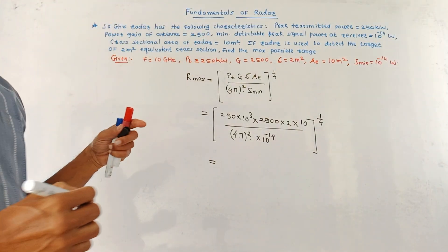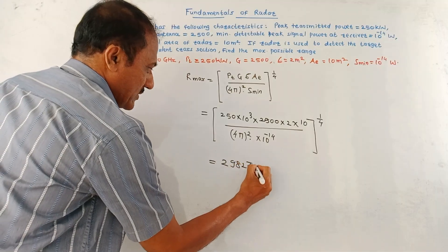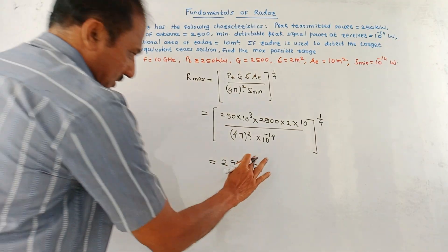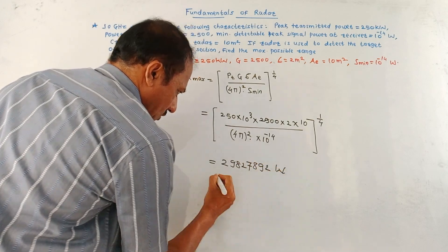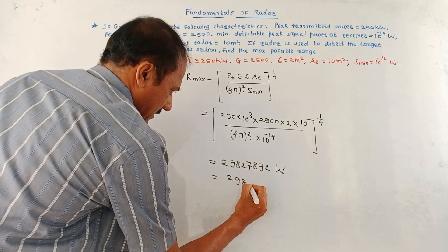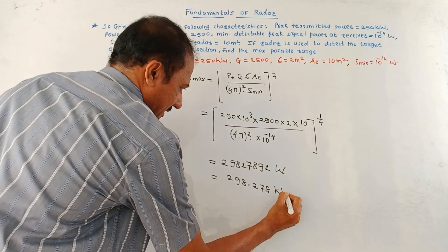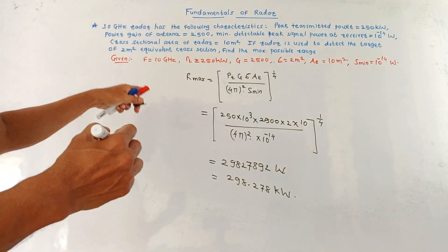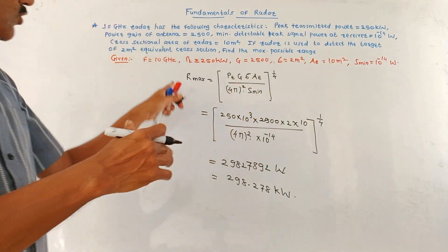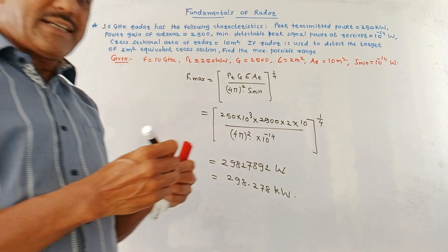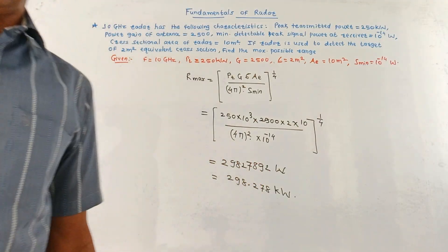Applying the radar range equation Rmax = [Pt × G × σ × Ae / ((4π)² × Smin)]^(1/4), substituting Pt = 250 × 10³, G = 2500, σ = 2, Ae = 10, Smin = 10⁻¹⁴, and solving on a calculator gives Rmax ≈ 298.278 km. These numericals are straightforward; you only need to remember this formula. Dear students, that's it for today's session. Thanks a lot for watching this video.